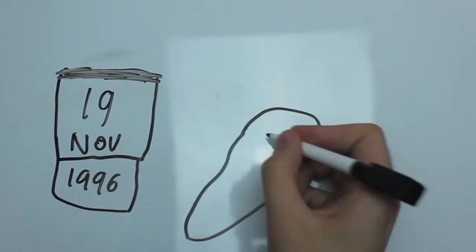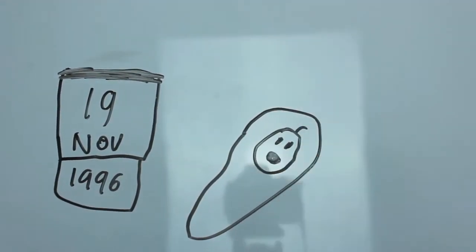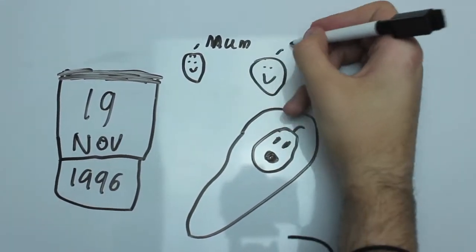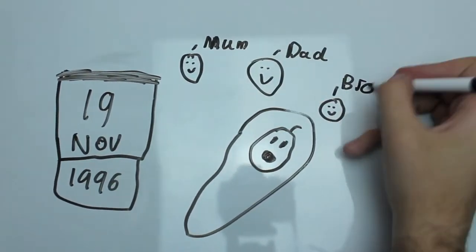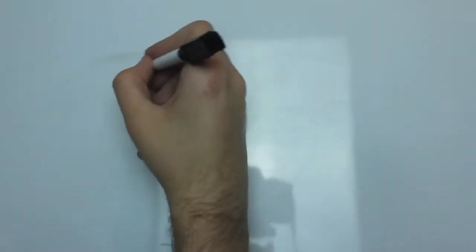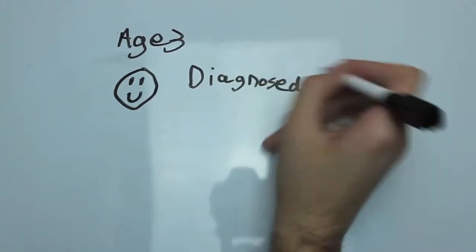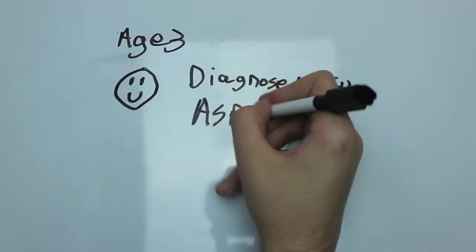I was born on November 19th 1996 at Stoke Mandeville Hospital in Aylesbury, England at 9:57 in the morning with my mum, dad, and older brother Matt there. At the age of three I was diagnosed with Asperger's Syndrome and till this day it has had a big impact on the way I have lived my life.